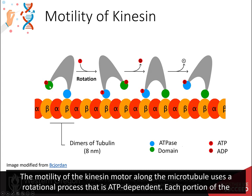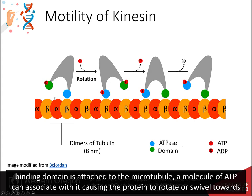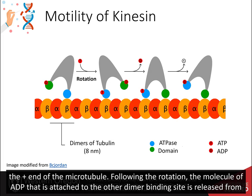Each portion of the kinesin dimer that contacts the microtubule is shown above in blue for one dimer and green for the other dimer. When the kinesin binding domain is attached to the microtubule, a molecule of ATP can associate with it, causing the protein to rotate or swivel towards the plus end of the microtubule.